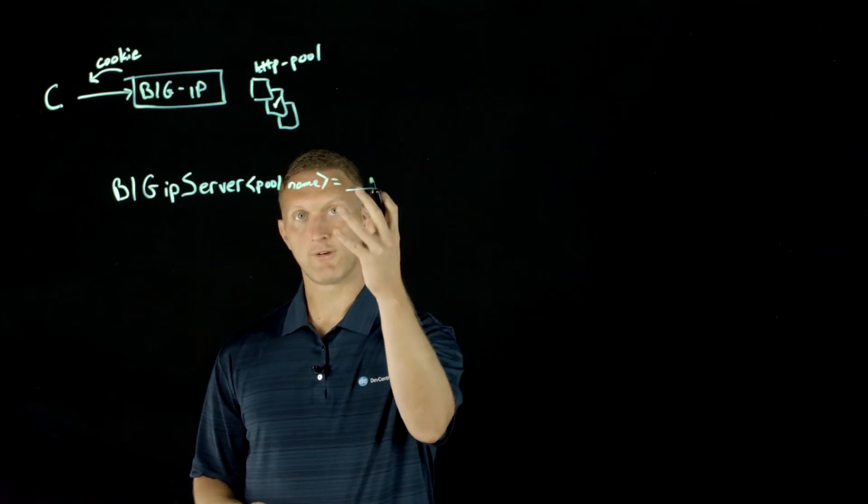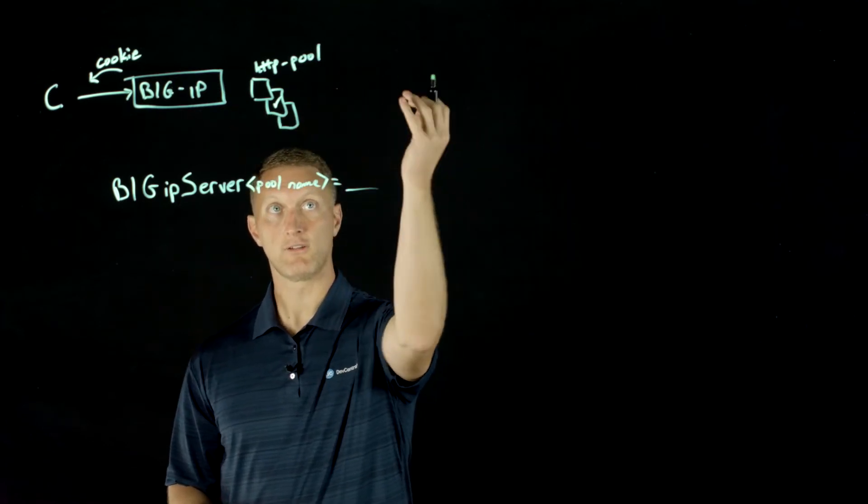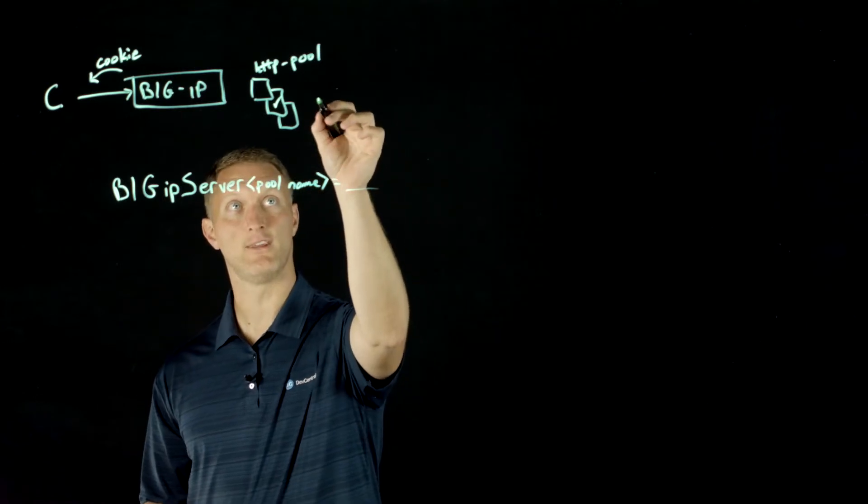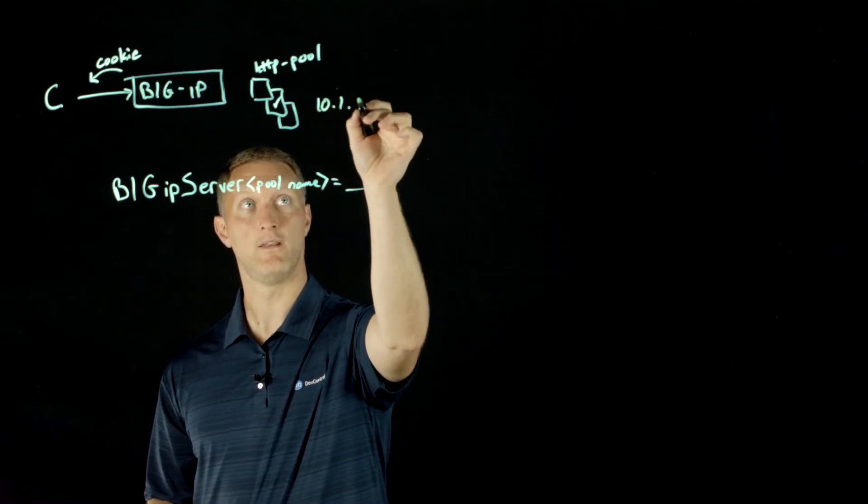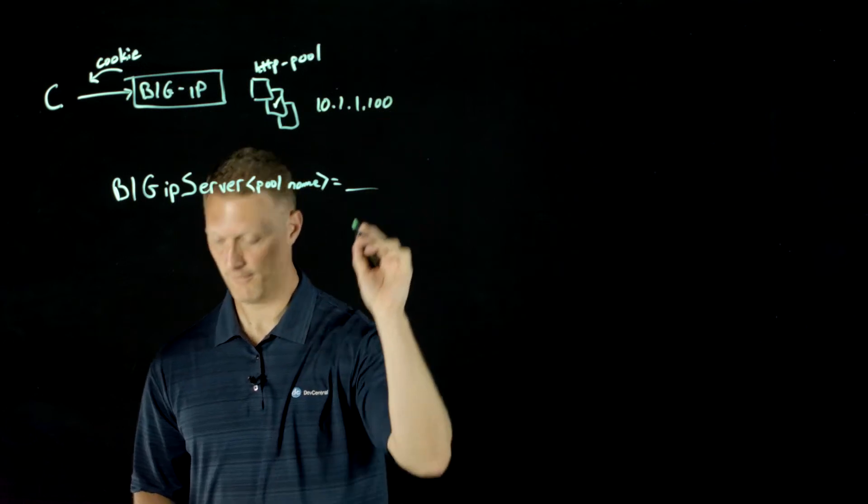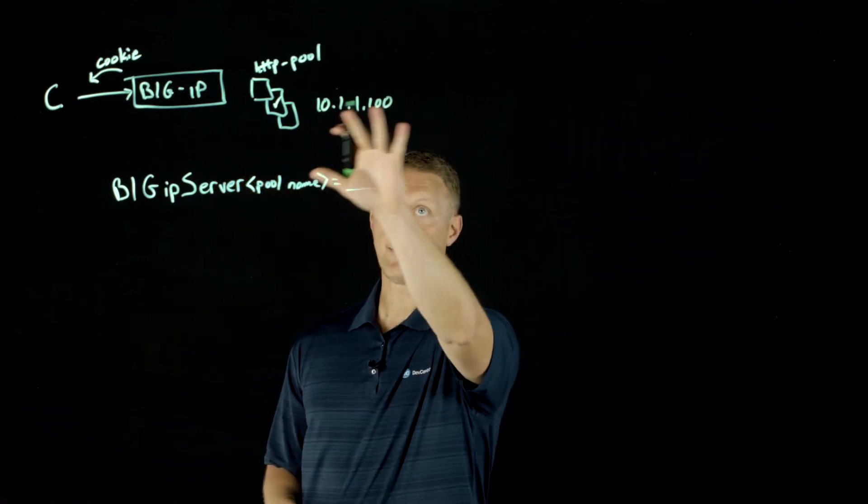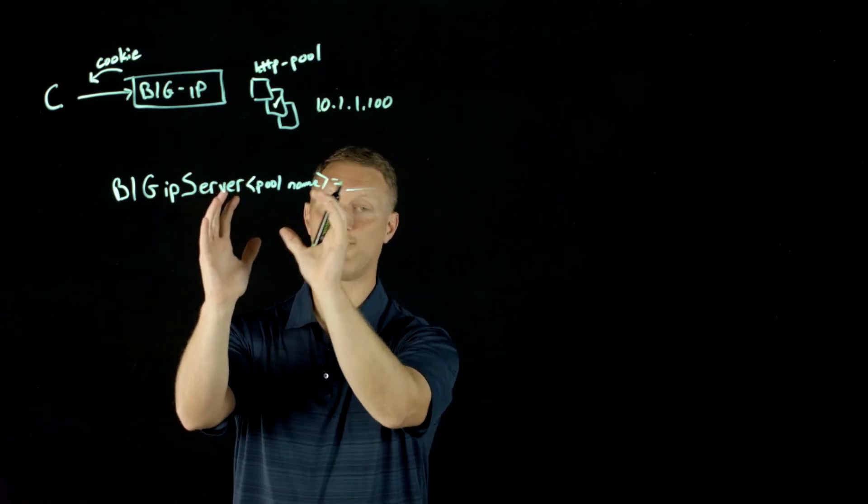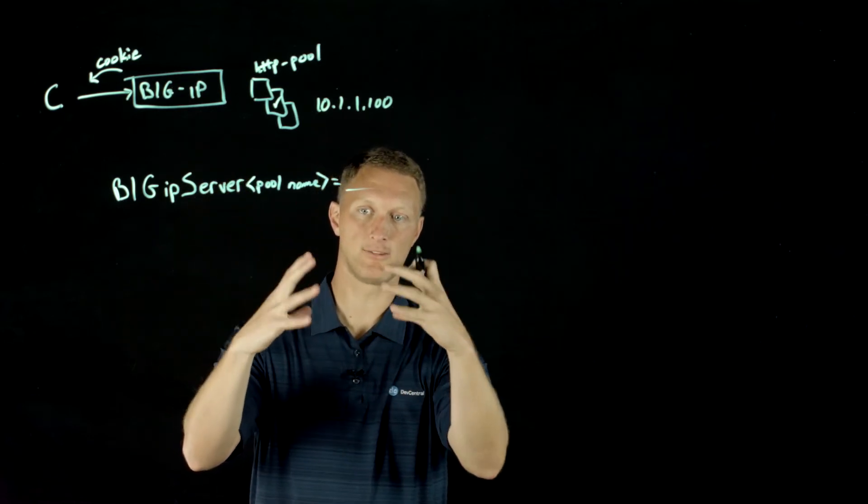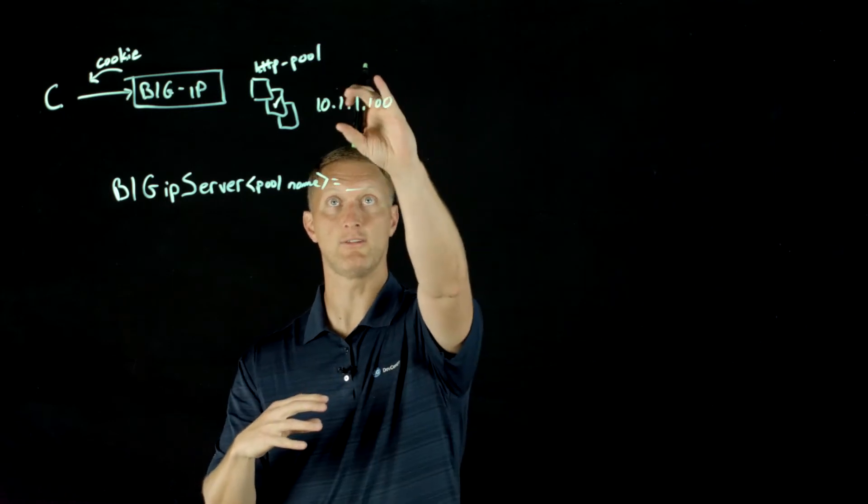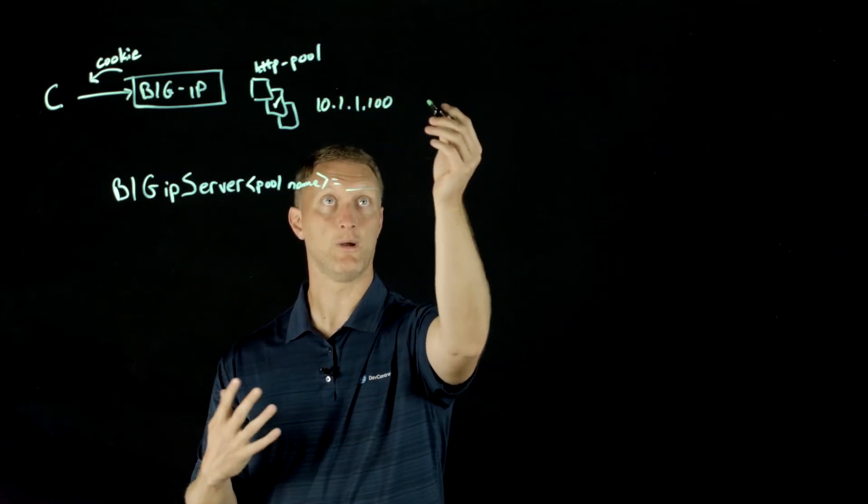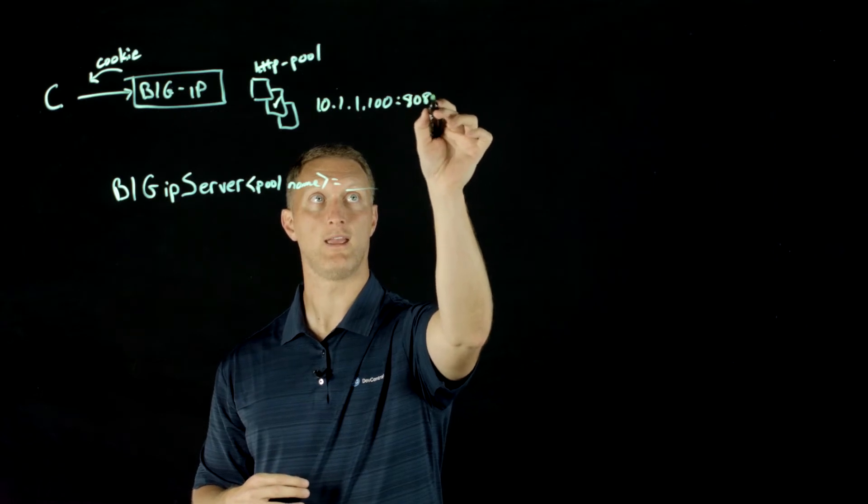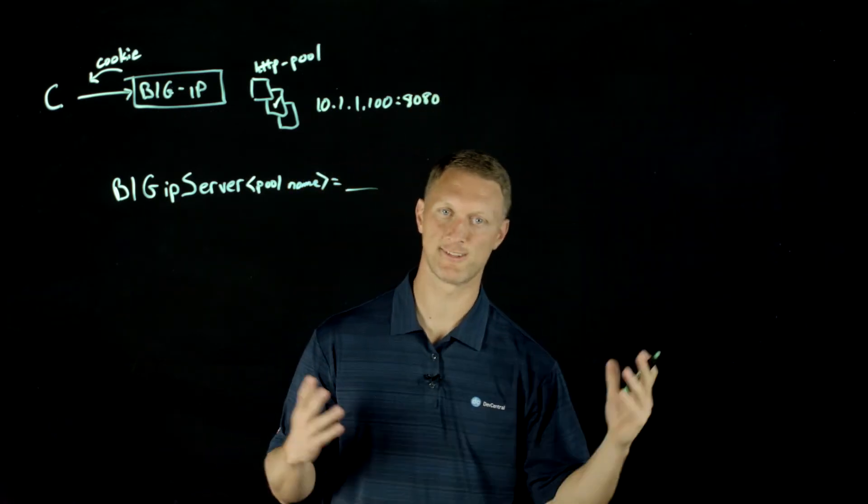Let's say that this backend server that ultimately gets selected has an IP address of 10.1.1.100. If that's the IP address of the server, the cookie value is going to be created based on the IP address of that server, as well as the port number. Let's say it was port 8080, just for example.